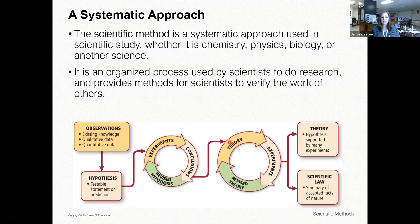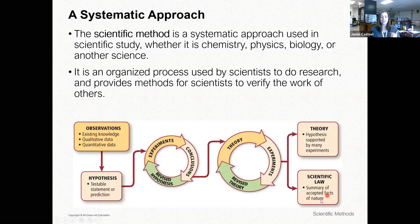I continue to experiment and might have to revise the theory if it doesn't work, but then I might come up with a law — a summary of accepted facts of nature. So a theory is the hypothesis supported by experiments, but a law is a summary of facts. Be clear: there are some big differences between them.